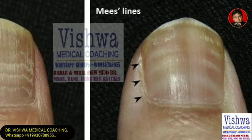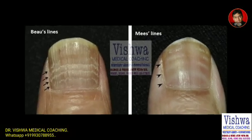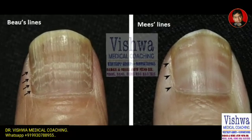Interestingly, both Beau's lines and Mees' lines are very commonly found together in cases of renal failure as well as chemotherapy.